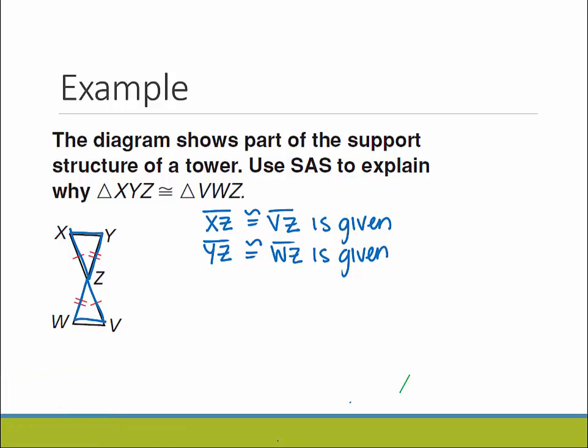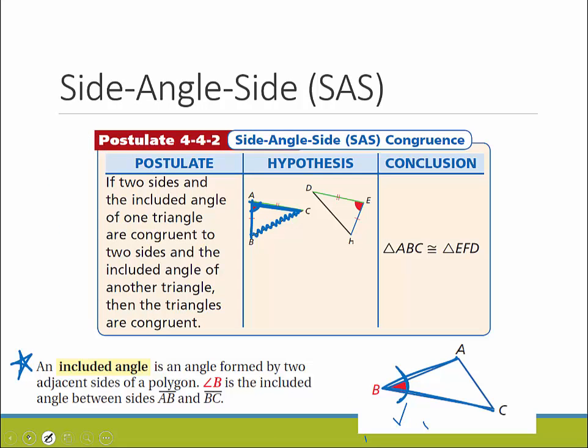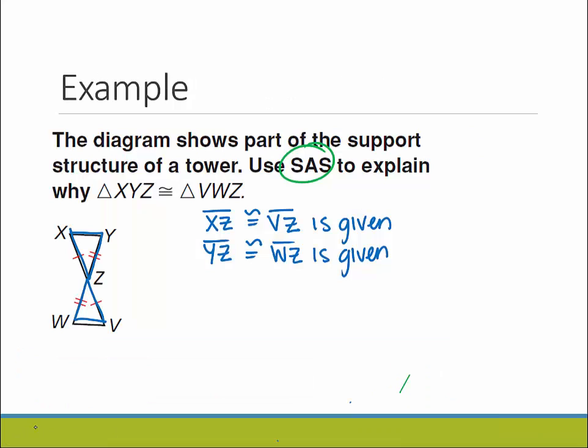Remember, we were told we had to use side-angle-side, so that means we need to find the included angle between those two. What we're going to do is look between our two sides. This side and this side, the included angle has to be this one. Again, this side and this side, included angle here.